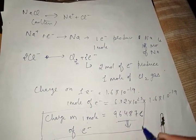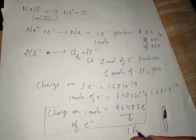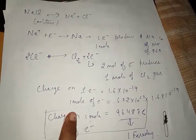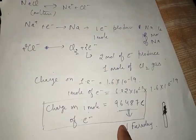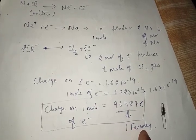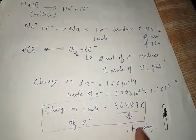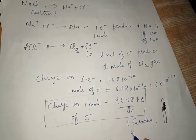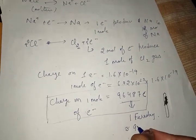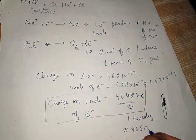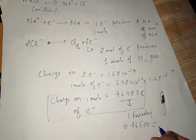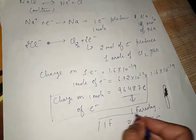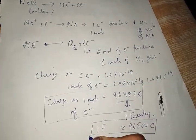This value — 96487 coulombs — is the charge on one mole of electrons. We give this a special name: one Faraday. One mole of electrons produces one Faraday of electricity. One Faraday equals 96487 coulombs, which we simplify to 96500 coulombs.